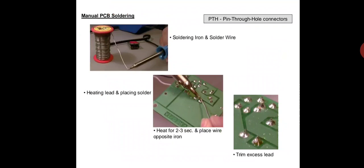The sequence of operations for soldering is: position the component, apply soldering iron, feed solder wire, apply heating lead, place solder, and trim excess lead.